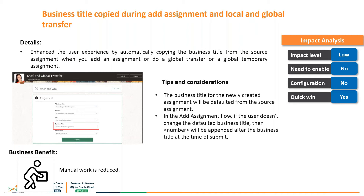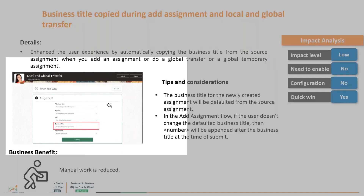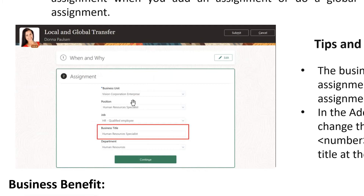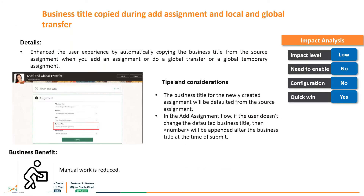During local and global transfers, there were many requests from businesses about copying the business title. Oracle has brought this capability in this release. In the responsive UI for local and global transfers, when copying primary assignment data, we can now copy the business titles too. The destination legal employer's business title will be appended with a number to differentiate them. This adds an advantage for HR admins doing global transfers and tremendously reduces manual work.